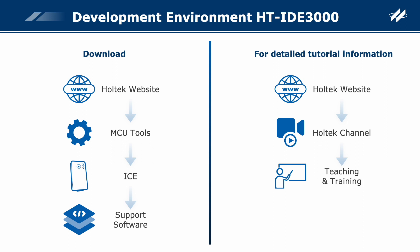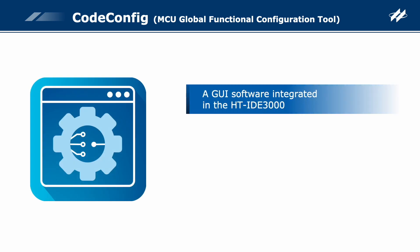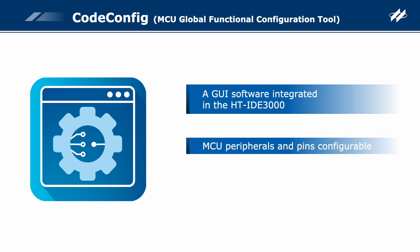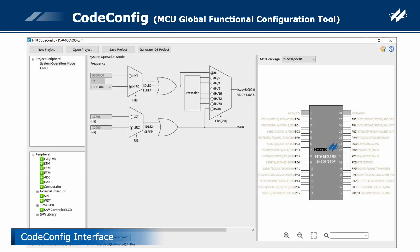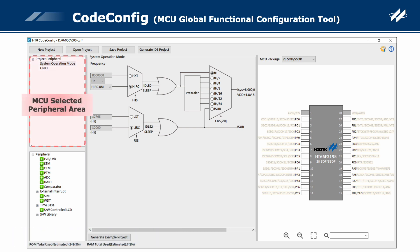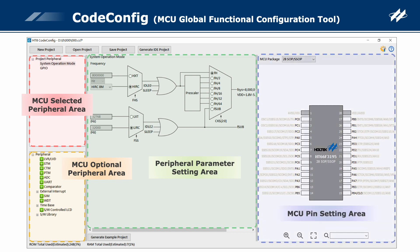For more detailed tutorial information, please visit Holtec's official website. CodeConfig is an intuitive graphical user interface software integrated in the HT-IDE 3000. It is available to configure the MCU peripherals and pins and automatically generate MCU initialization code, saving initialization setting time for users. The CodeConfig main interface contains five areas: MCU selected peripheral area, MCU optional peripheral area, peripheral parameter setting area, MCU pin setting area, and code generation area.